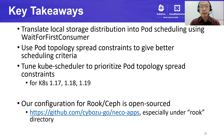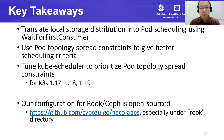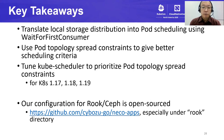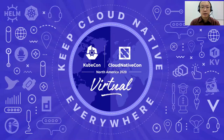Let's wrap up with key takeaways. In order to deploy a distributed storage system using Rook and Ceph on our on-premise cluster, we translate the problem of local storage distribution into the pod scheduling problem using wait-for-first-consumer volume binding mode. As for pod scheduling, we use pod topology spread constraints for better distribution. In order to cope with kube-scheduler's scoring, we tune it to prioritize the constraints. Our configuration for Rook and Ceph is open sourced on GitHub — please take a look. That's all, thank you.